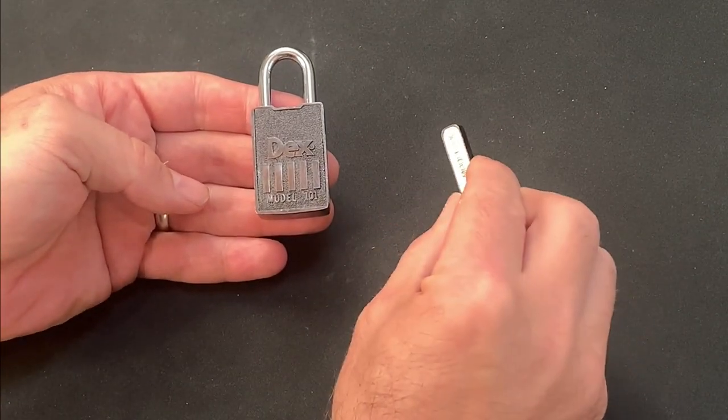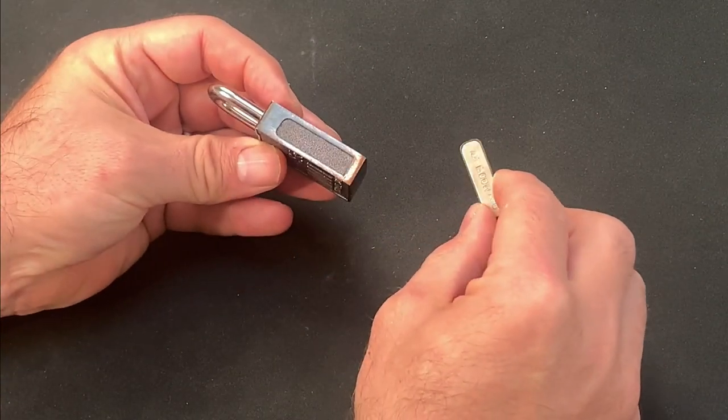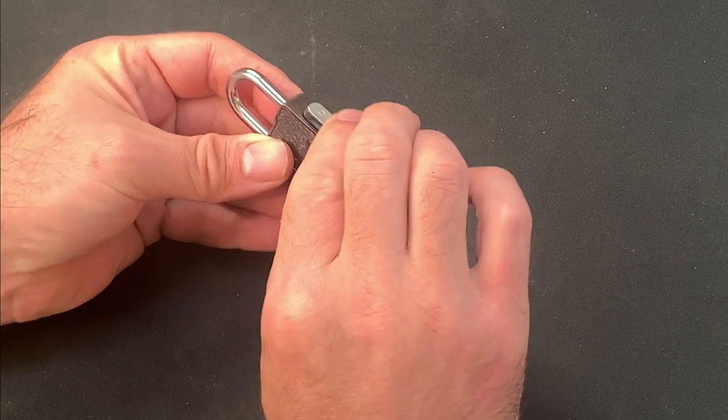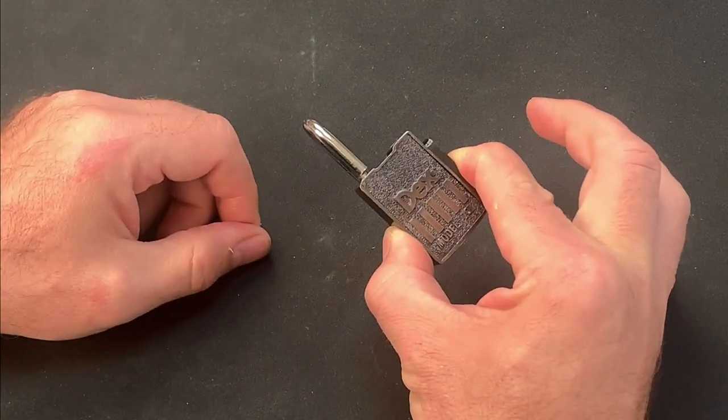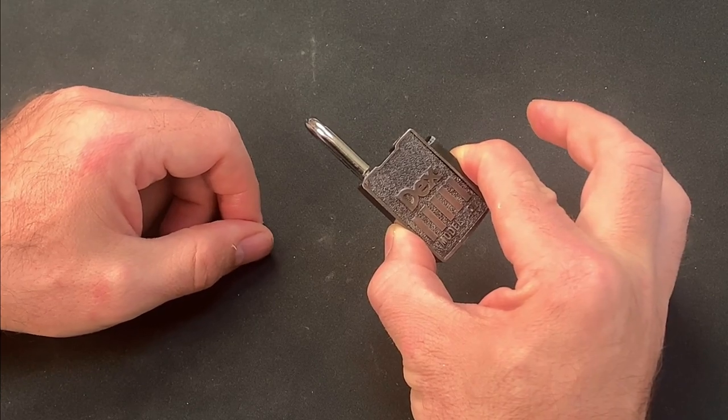Because of the way that the shackle is locked in place, this model isn't shimmable, and I haven't found another way of securing a non-destructive open. So what looks like a relatively simple mechanism is actually surprisingly secure.